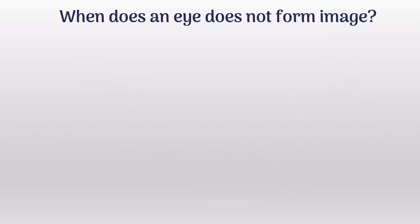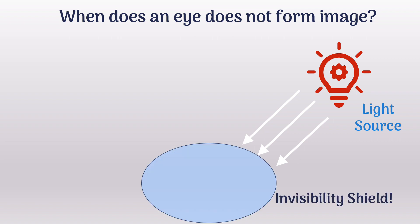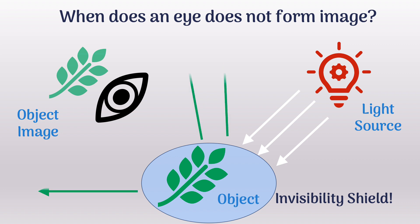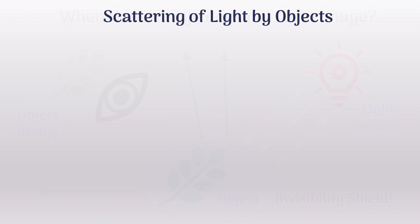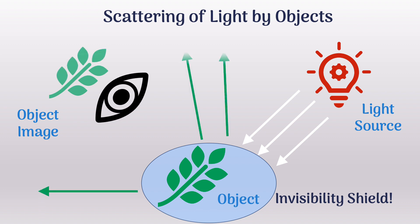Here comes the concept of invisibility based on light waves reaching the human eye. If an imaginary invisibility shield is considered to be present around the leaves, the work of the shield is to scatter the light coming from the source in all possible directions. This reduces the intensity of light reaching the human eye, which creates the illusion of invisibility. The logical conclusion is that if light scattered by an object does not reach the eye, then the object becomes invisible.